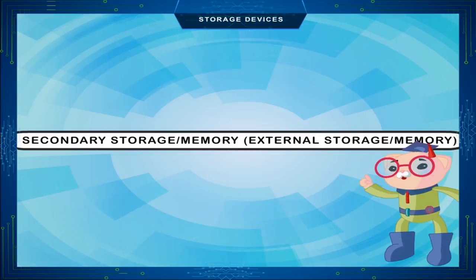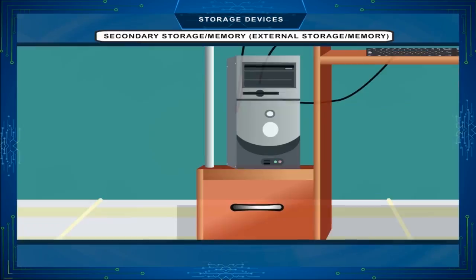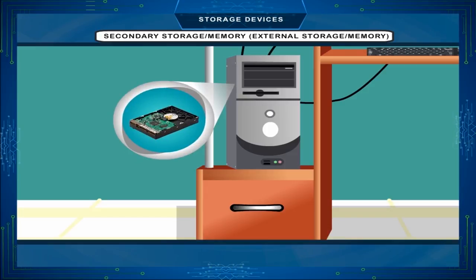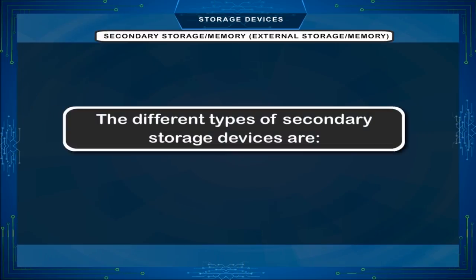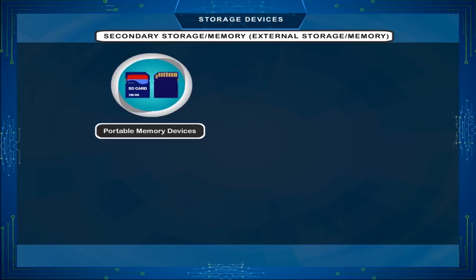Secondary storage or memory, also called external storage or memory. The files and programs which are not always required to operate the computer system are stored in secondary storage. These programs and files remain in the secondary memory and do not get erased even if the power is switched off. They are loaded into the primary memory when required.